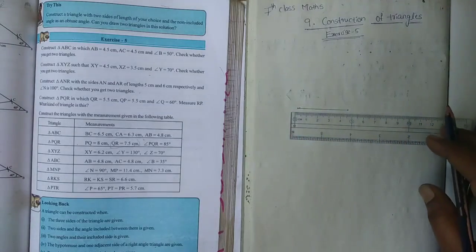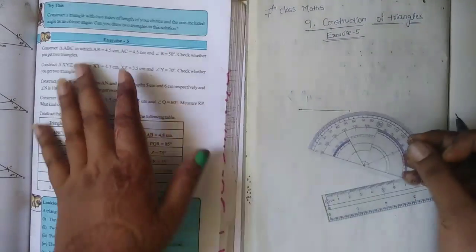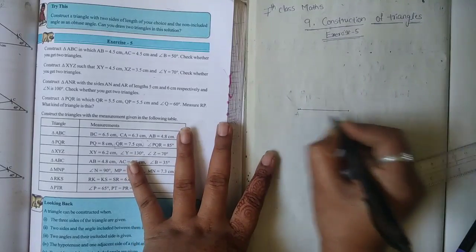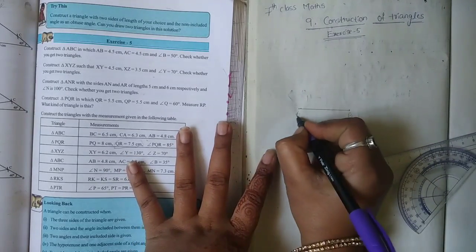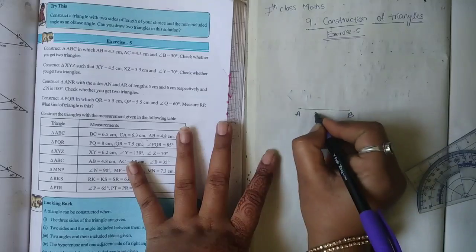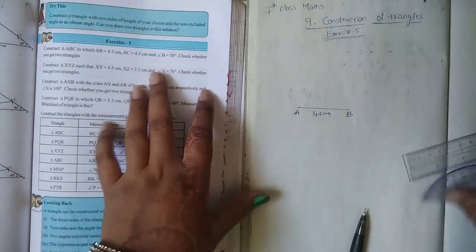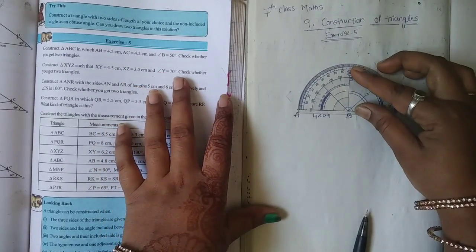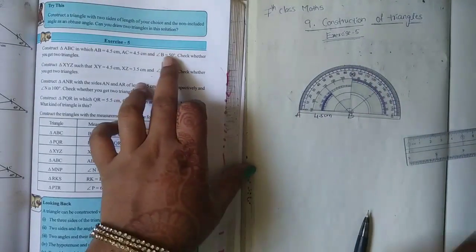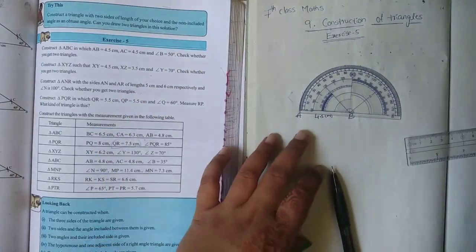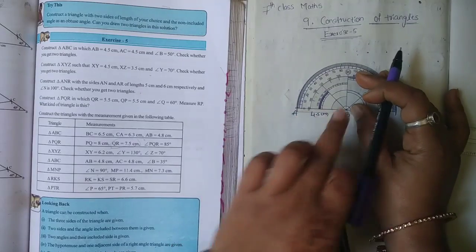Next, we draw angle B. Angle B is 50 degrees. At point B, we draw the angle of 50 degrees.